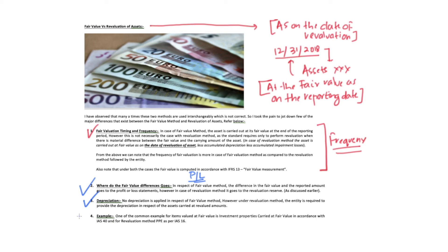Now let's look at examples. For the fair value method, one of the most important examples is investment properties. However, in respect of revaluation of assets, the example is property, plant, and equipment carried under IAS 16.